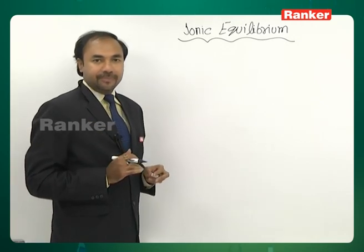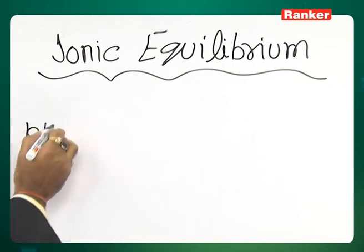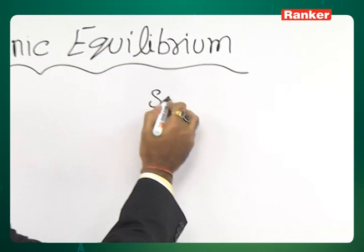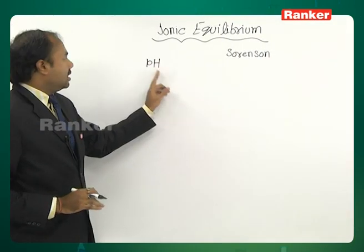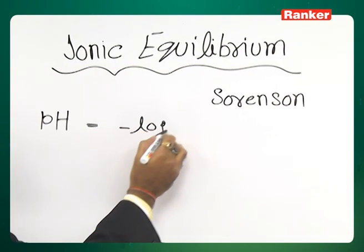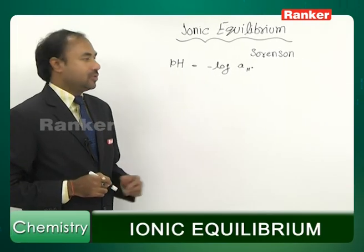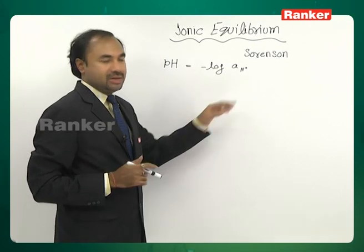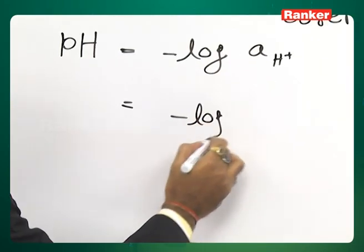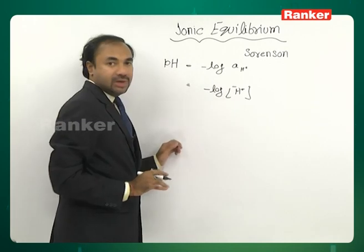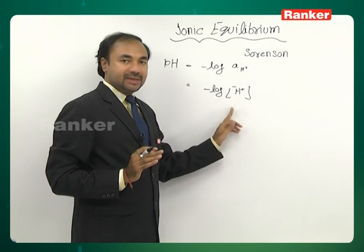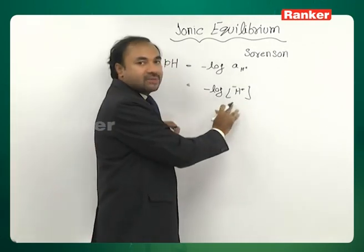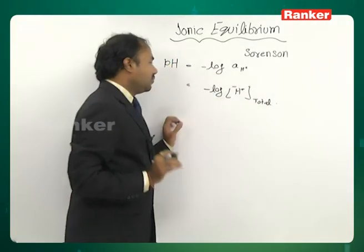The most important concept in ionic equilibrium is pH, also called the power of hydrogen. The term pH was given by a scientist known as Sorensen. He said that pH is equal to minus log of the activity of H⁺ ions. In dilute solutions, activity can be taken as equal to concentration of H⁺ ions, so pH equals minus log of total H⁺ ion concentration of the solution.